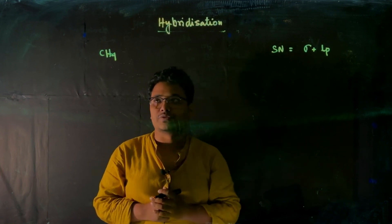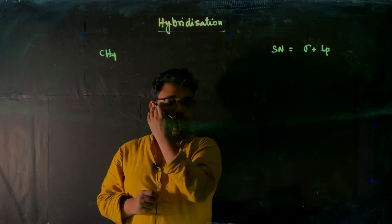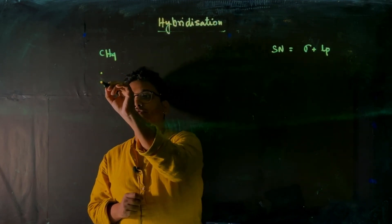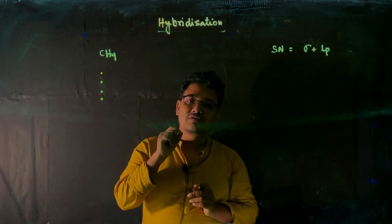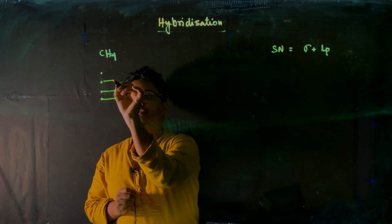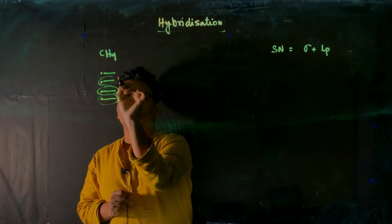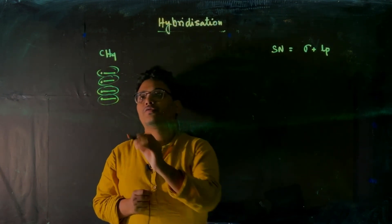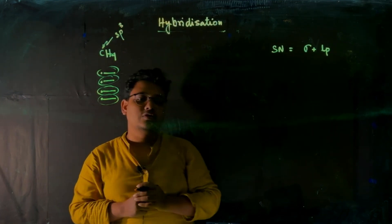According to the steric number, we can find out the hybridization. For CH₄, the central atom carbon has four valence electrons, and each hydrogen will form a sigma bond with carbon — so we have four sigma bonds total. Therefore, the steric number is four, and the hybridization of carbon will be sp³.